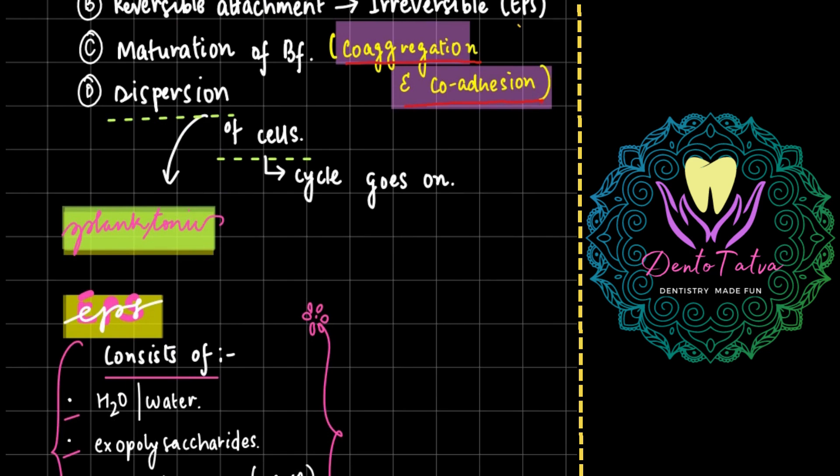What do you understand by coaggregation? Coaggregation is when there is a genetically distinct bacteria which are attached to one another via specific molecules. And coadhesion is by which the bacterial cell in that particular suspension will adhere to the biofilm. So bacteria attaching to the biofilm is known as coadhesion and bacteria to bacteria attachment is known as coaggregation.